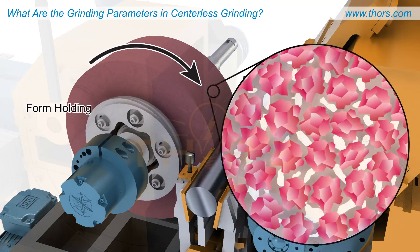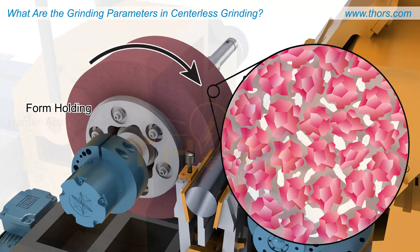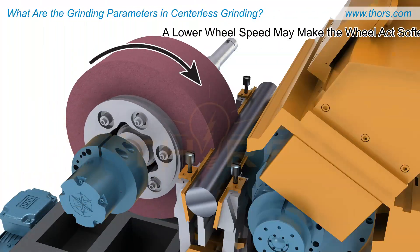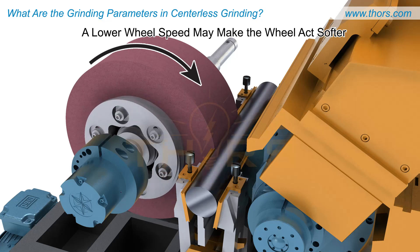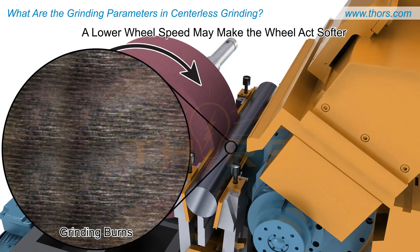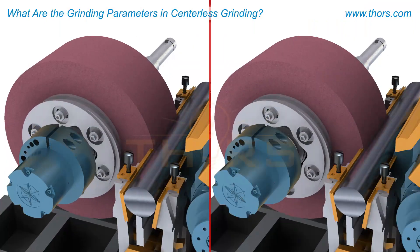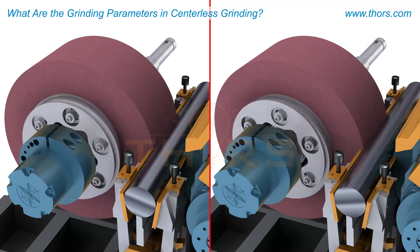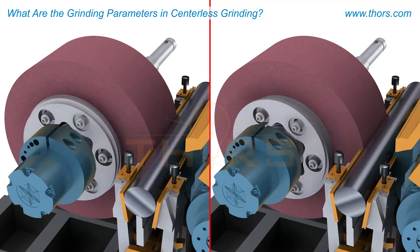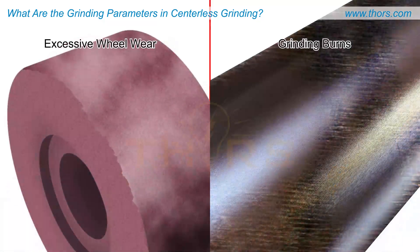The form holding of the wheel, which is the wheel's ability to maintain its geometry, is improved by the harder acting wheel. A lower wheel speed may make the wheel act softer, creating a more aggressive cutting action, which makes the wheel less likely to cause grinding burns on the workpiece. The grinding wheel speed is critical as it directly affects the surface finish and overall grinding performance. Therefore, it is necessary to choose a speed that prevents excessive wheel wear and grinding burns.